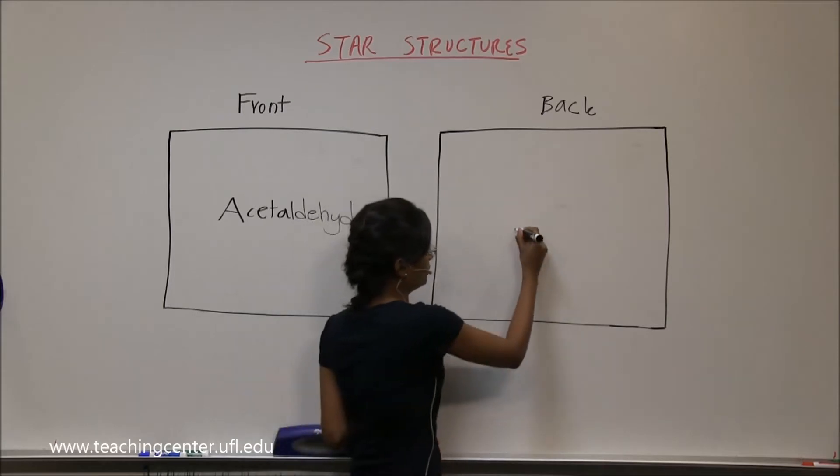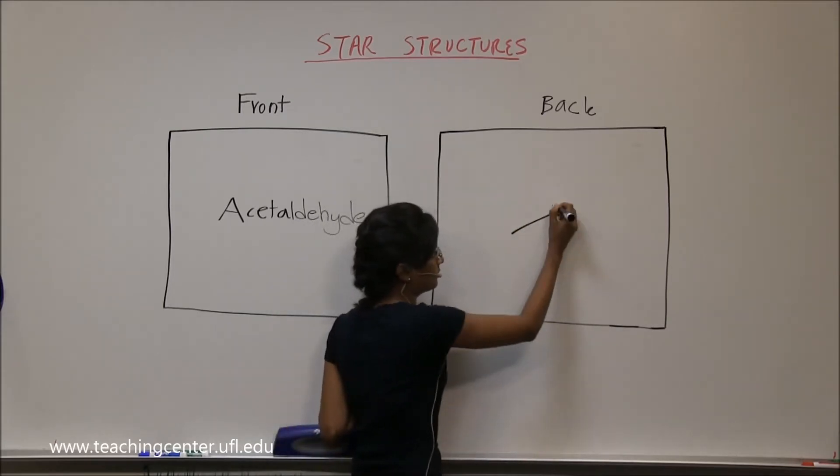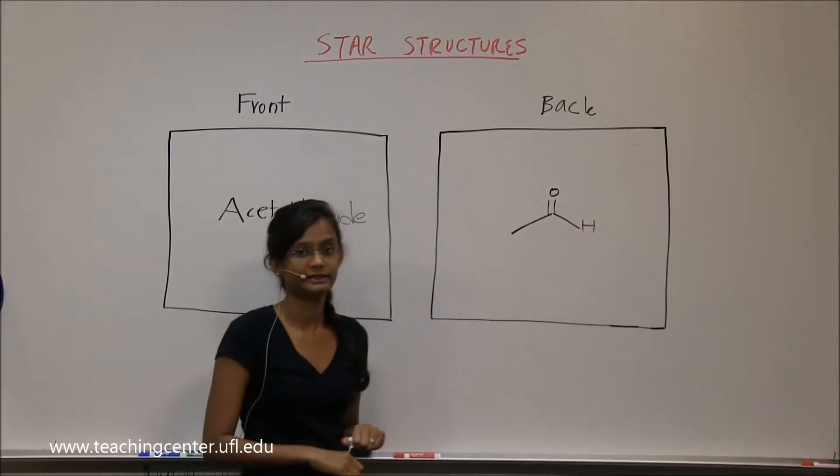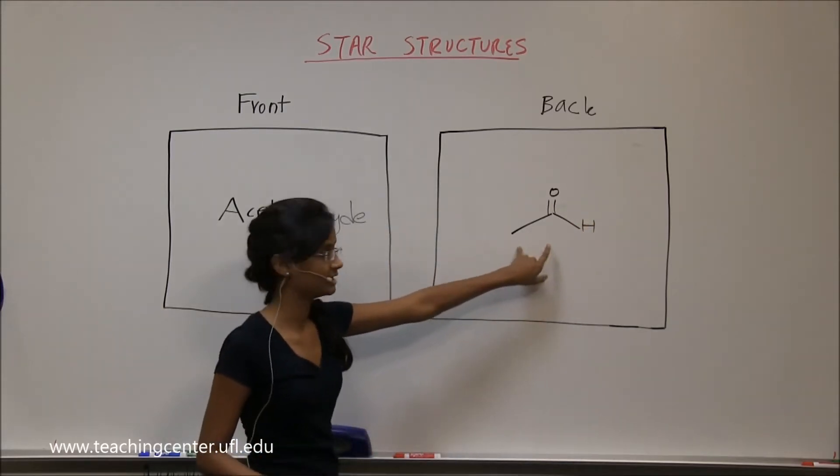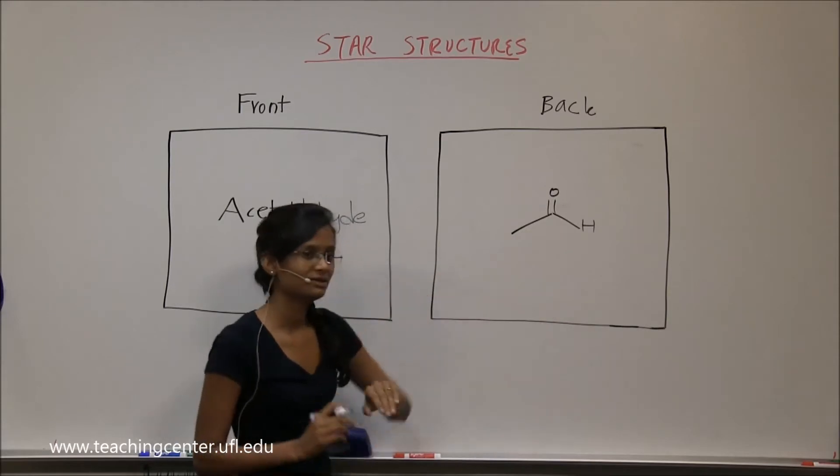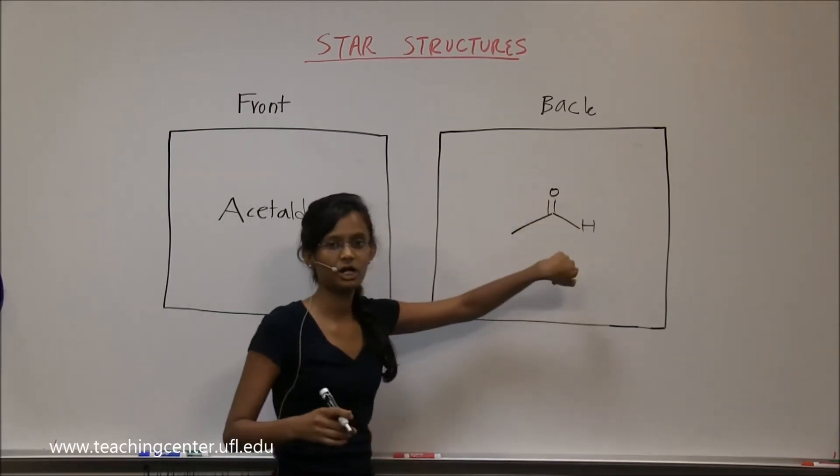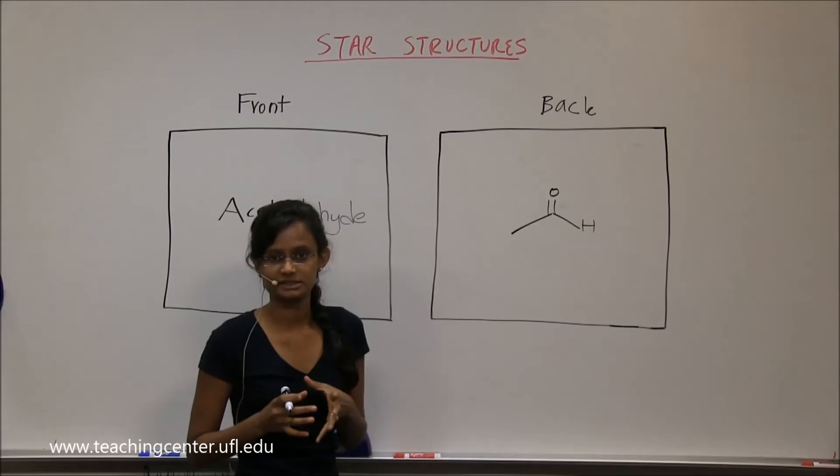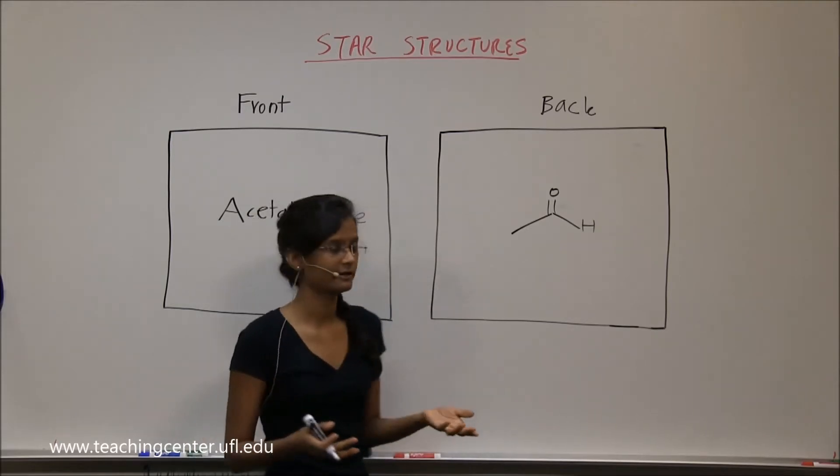So now you know you have two carbons, but then one of the carbons has aldehyde group on it. So this is your acetaldehyde. Make sure you don't count additional tube besides the aldehyde carbon. It's part of it. That's why it's called acetaldehyde.